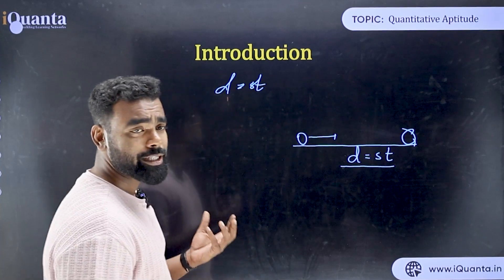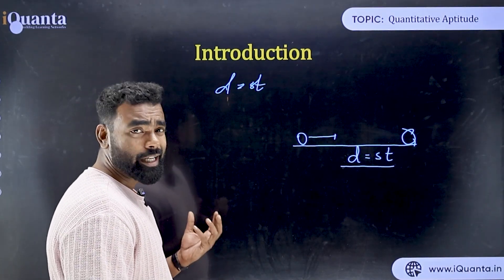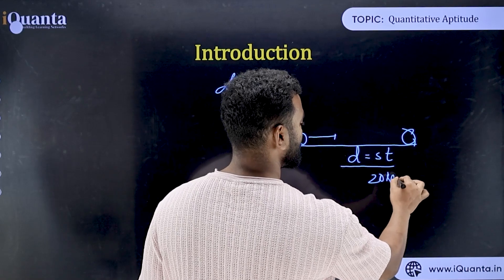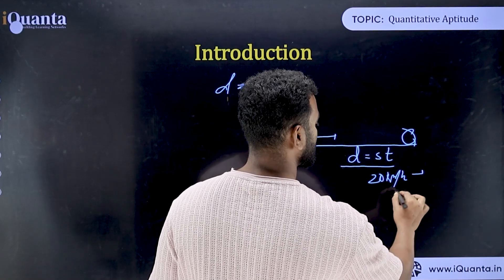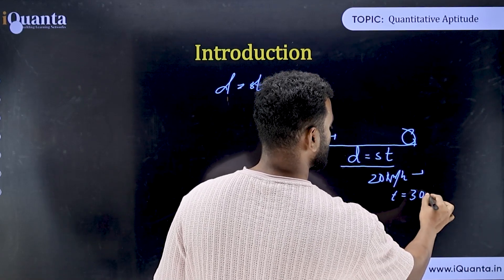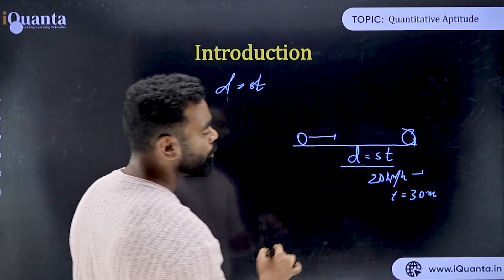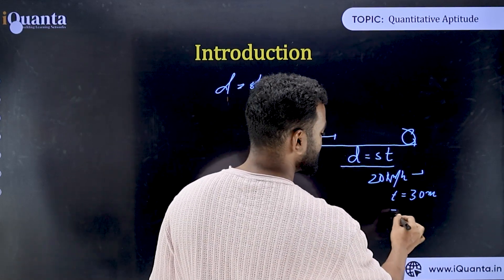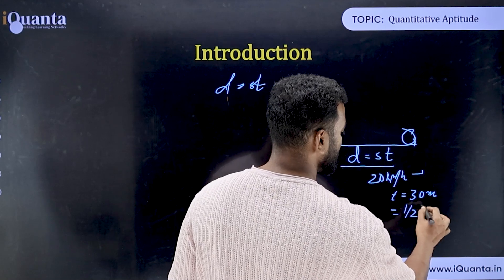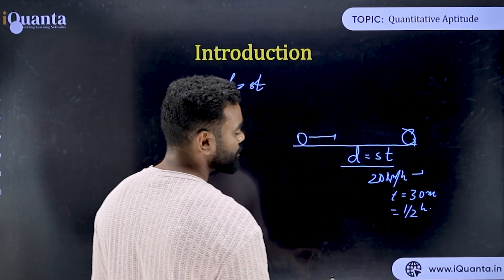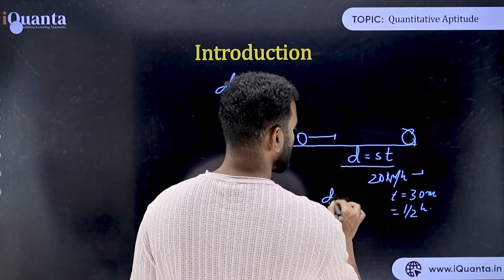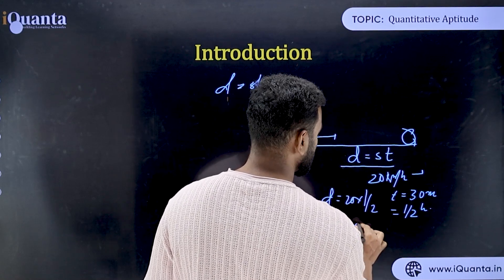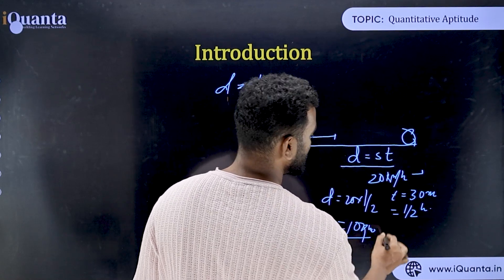One important thing: all units must be consistent. For example, if your speed is 20 km/h and your time is 30 minutes, convert 30 minutes to half an hour. Then distance = 20 × 0.5 = 10 kilometers. Units are very important — you cannot mix them.